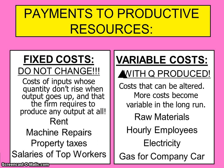Fixed costs are going to be there whether output is zero or a million. So a little clue when you're doing calculations is that if there are any costs at zero units of output, then you know that that is the amount of the fixed costs.